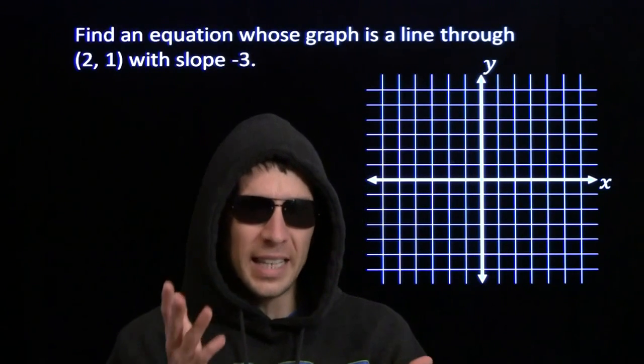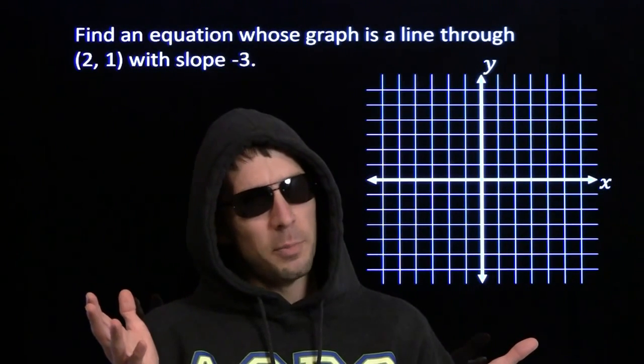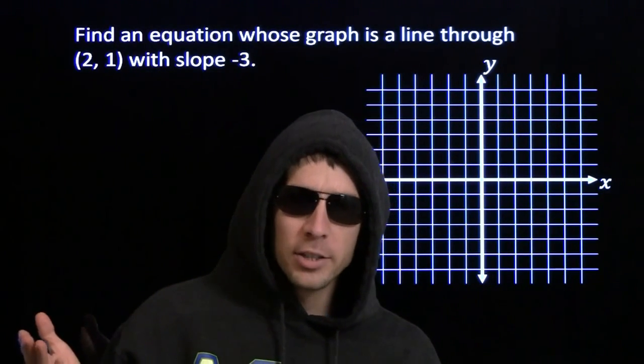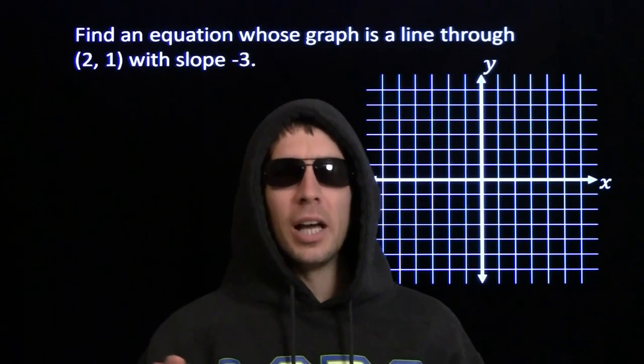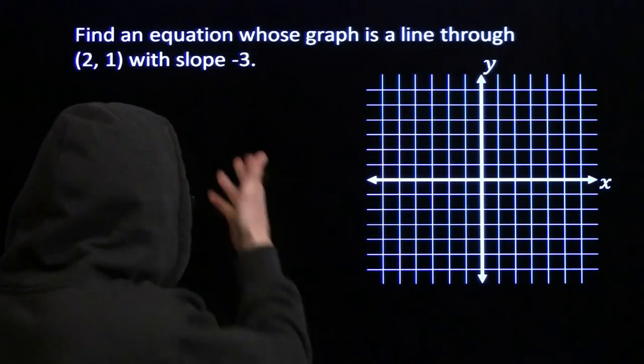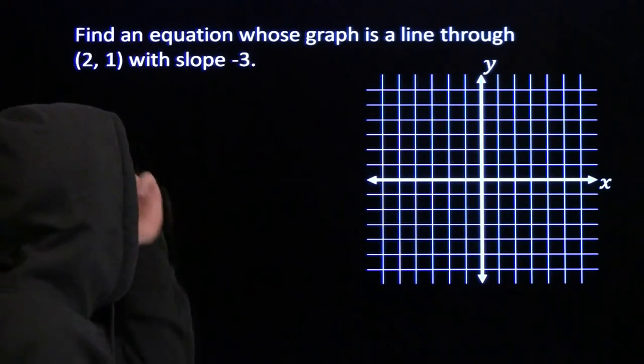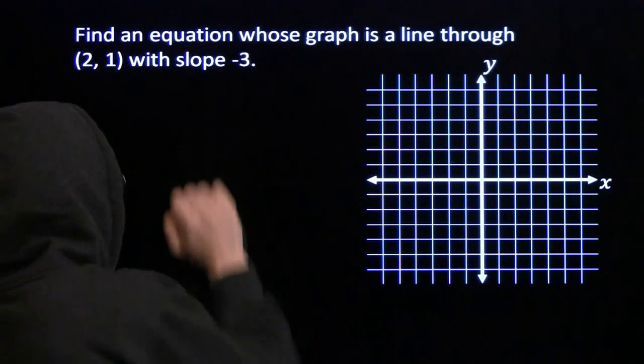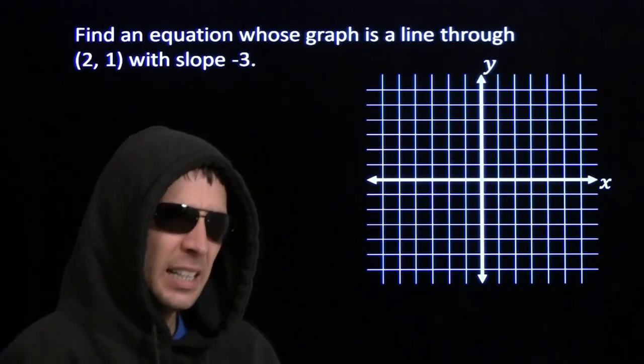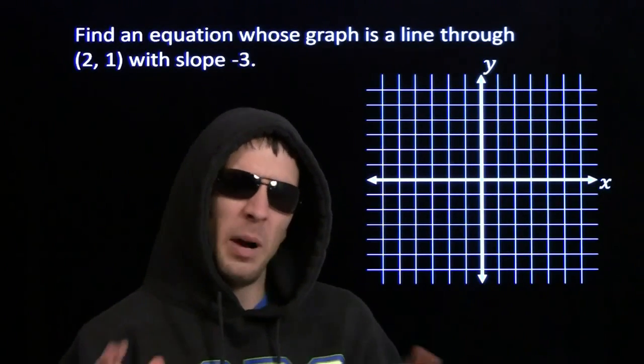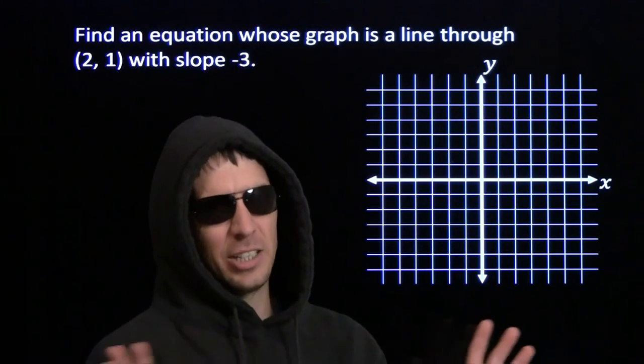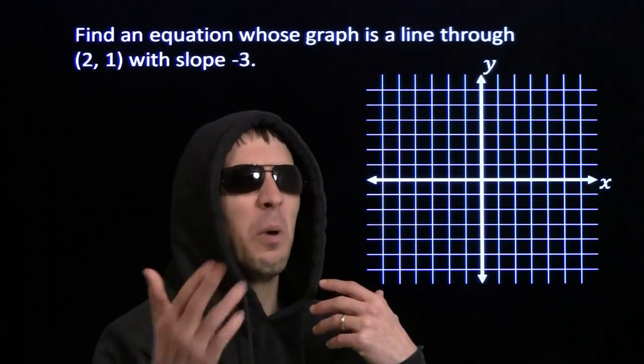I'm gonna show you a super slick way to tackle some line problems. Here's the best part: you already know how to do this. You might just not realize it yet. Now, here's the problem. We're gonna try to find an equation whose graph is a line through (2,1) that has slope -3. Now there are other ways to do this problem. I'm gonna let that other guy show you those, because our way is better.